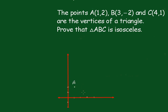B is (3,-2). B is 3, negative 2 down here. And C is (4,1). C is 4, 1 there.